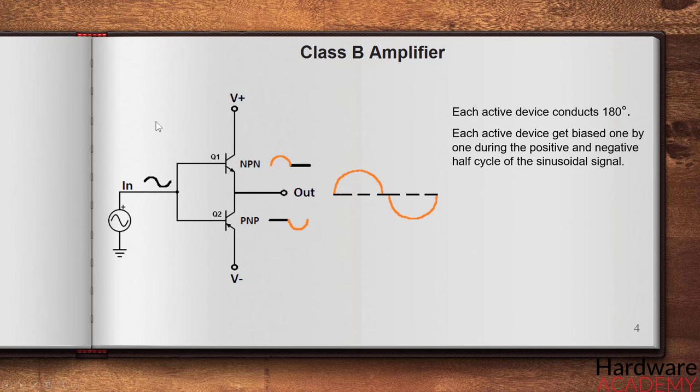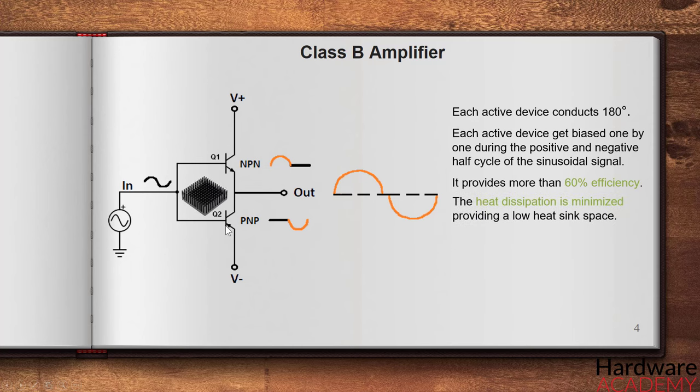Compared to the efficiency of a class A amplifier which is 25 to 30%, the class B amplifier can have an efficiency more than 60%. Also the heat dissipation is minimized in this class providing a low heat sink space.